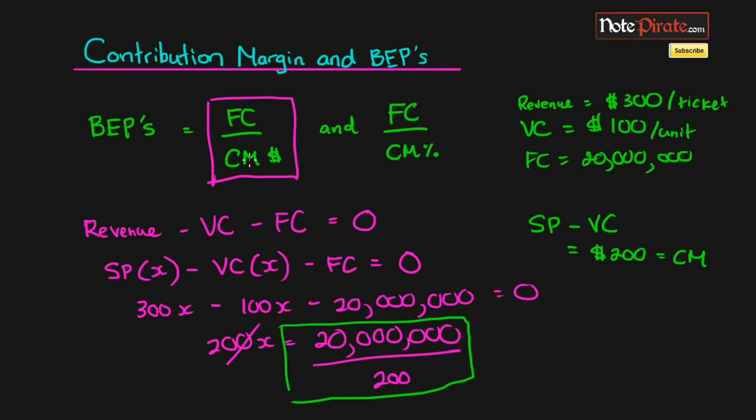So $200 is the contribution margin, and that's how we got that equation. A quick way to explain the contribution margin is that the contribution margin per unit is the amount that the unit contributes to chipping away at the fixed cost, and actually achieving our breakeven point.